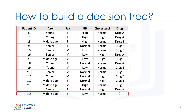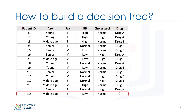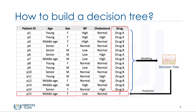Imagine that you're a medical researcher compiling data for a study. You've already collected data about a set of patients, all of whom suffered from the same illness. During their course of treatment, each patient responded to one of two medications — we'll call them drug A and drug B. Part of your job is to build a model to find out which drug might be appropriate for a future patient with the same illness. The feature sets of this data set are age, gender, blood pressure, and cholesterol of our group of patients, and the target is the drug that each patient responded to. It is a sample of binary classifiers, and you can use the training part of the data set to build a decision tree, and then use it to predict the class of an unknown patient — in essence, to come up with a decision on which drug to prescribe to a new patient.